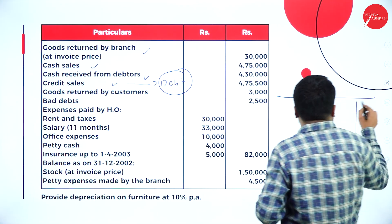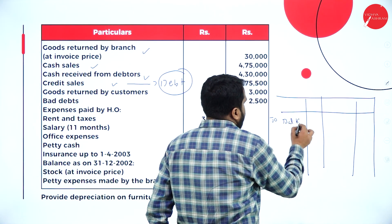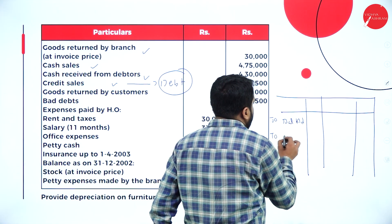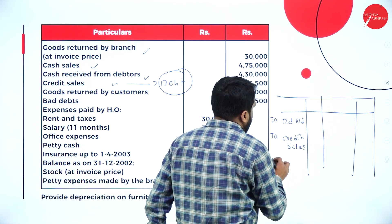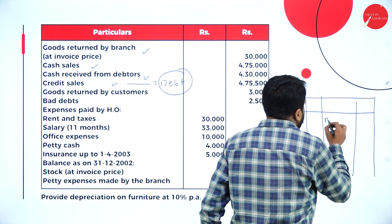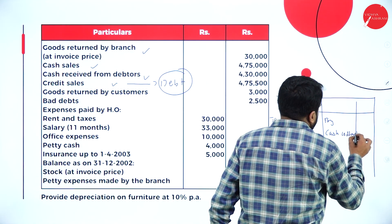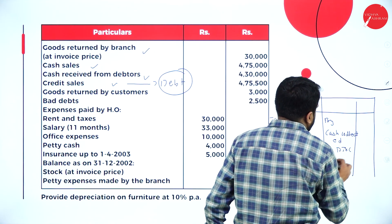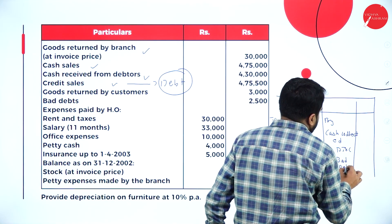Under the debtors account, it is simple. On the debit side: balance brought down (opening balance) and credit sales — only two things. On the credit side: cash collected, discount, and bad debts.